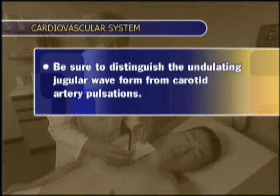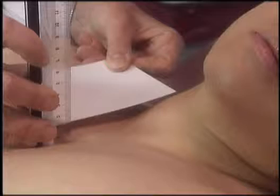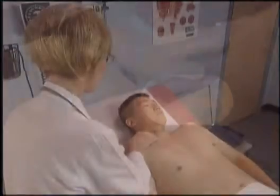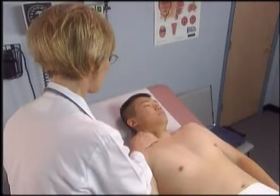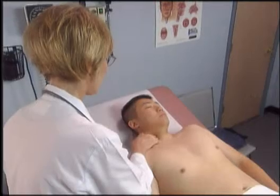Be sure to distinguish the undulating jugular waveform from carotid artery pulsations. The steps for measuring the JVP, when followed carefully, result in a measurement that is accurate and useful. Next, assess the carotid pulse.